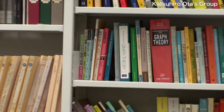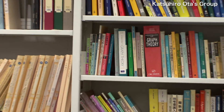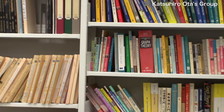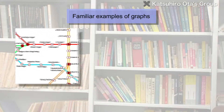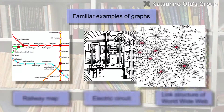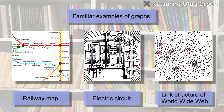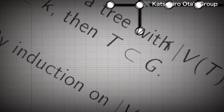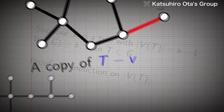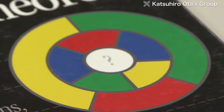Graphs are closely related to many aspects of daily life. Familiar examples of things that could be described as graphs include railway maps, electric circuits, and the link structure of the World Wide Web. In such ways, graph theory has many applications, but many problems in graph theory originated in puzzles.